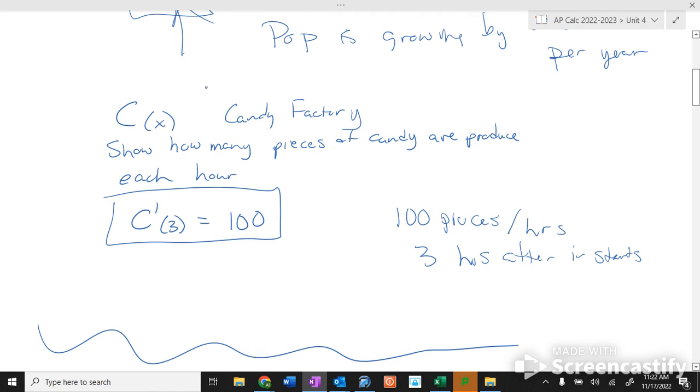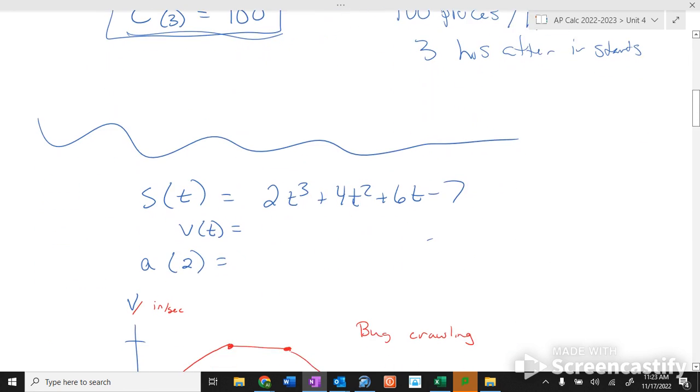C sub X is the total number. So this would be how much is produced three hours into it. So this is a total number. This is not the pieces per hour. So just so that's clear to you.